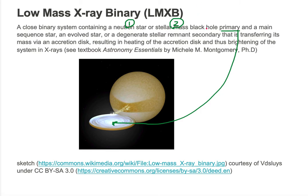The secondary object can be a main sequence star — that's a stable adult star. It could be an evolved star, so it's evolving off the main sequence, turning into a subgiant or a red giant, for example. Or it could be a degenerate stellar remnant — it's passed all the way through its evolution and is now something such as a white dwarf.